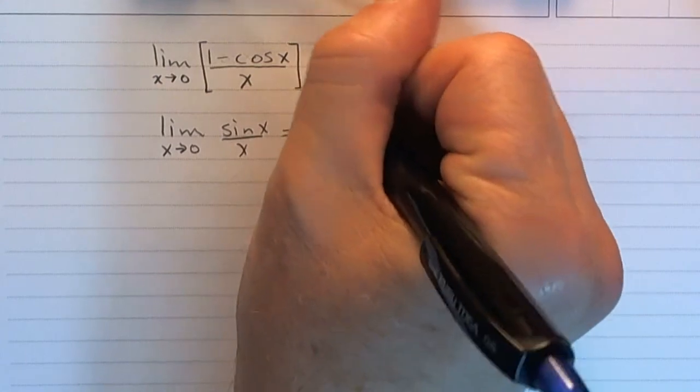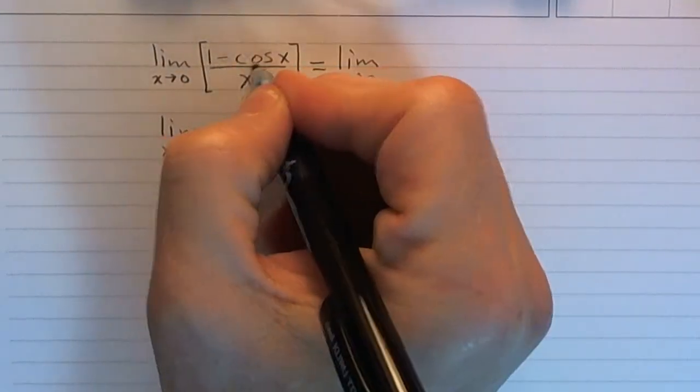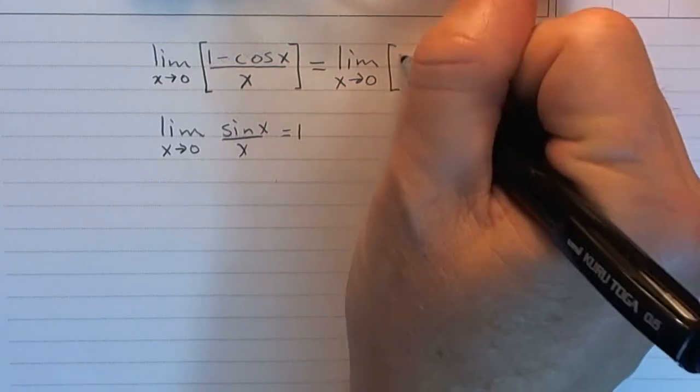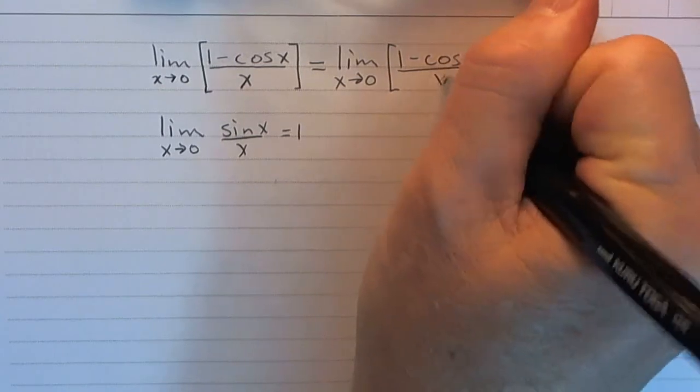Let's think about what would happen if we multiplied the top and the bottom by the conjugate. Here we have 1 minus cosine. Let's multiply by 1 plus cosine. So we have 1 minus cosine x over x.